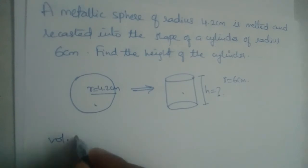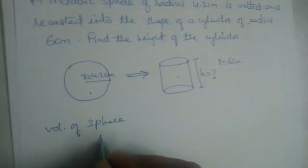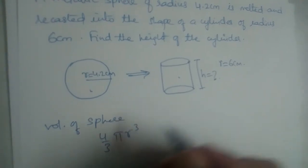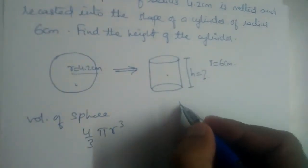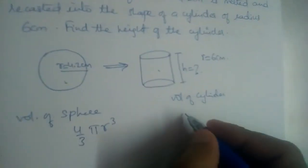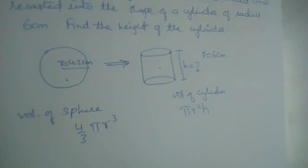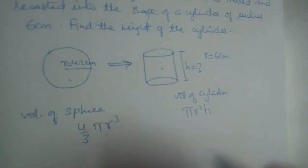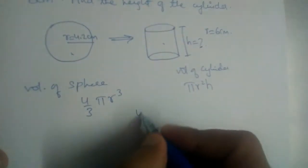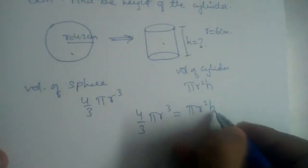First, let us find the volume of the sphere. We know it is equal to 4/3 π r³. And the volume of the cylinder is π r² h. So if we equate these two, we get 4/3 π r³ = π r² h.